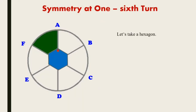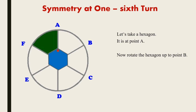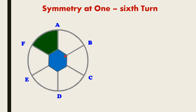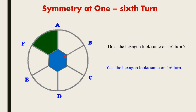Let's take a hexagon. We know this hexagon is at point A. Now rotate the hexagon from point A up to point B. The red color marker is at point A, and after rotation it is at point B. Does the hexagon look the same on one by six turn? Obviously yes — the hexagon is looking the same. The hexagon looks the same on one by six turn.